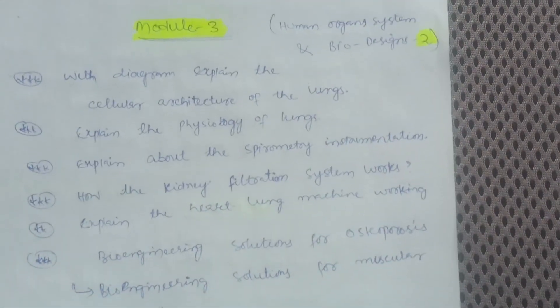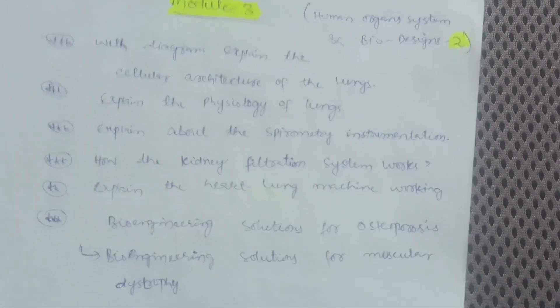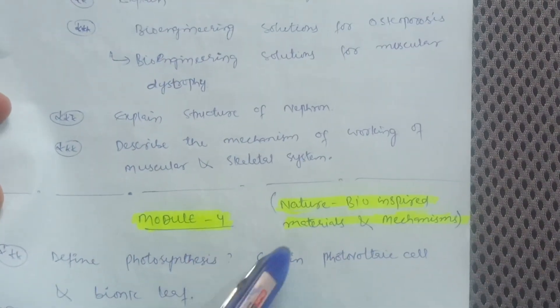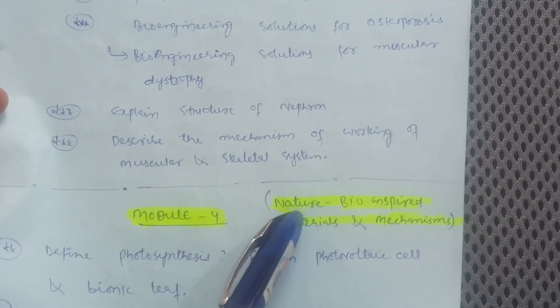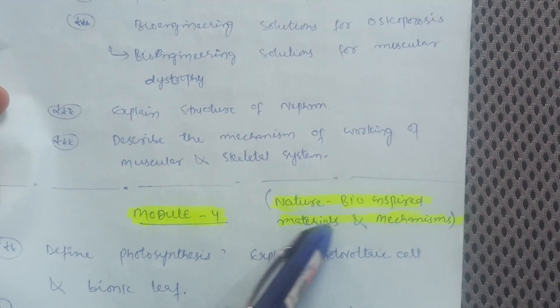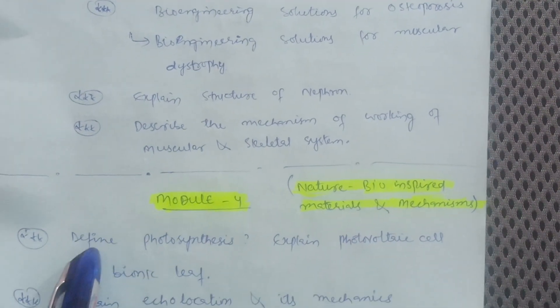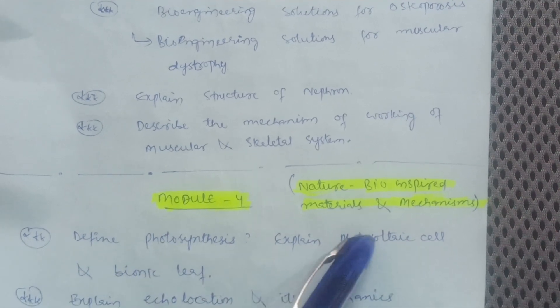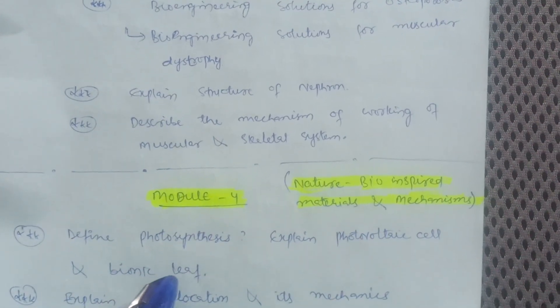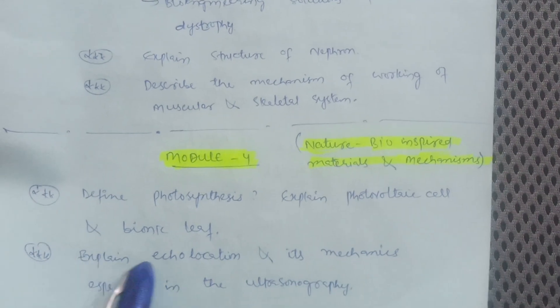This much is enough in Module 3. These are again eight questions from Module 3. As you know, there may be 20 questions from each module, but I have condensed it to these eight questions in every module. Then Module 4 comes up in which you have to cover. The chapter name is Nature Bioinspired Materials and Mechanisms.